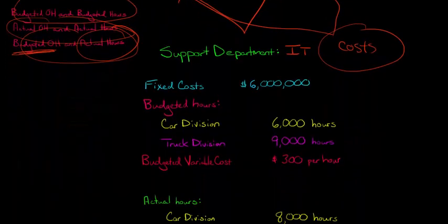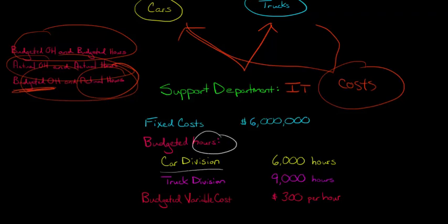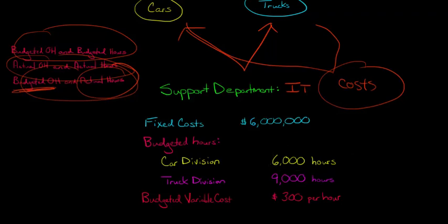Let's say this IT department has $6 million in fixed costs. We need to know the budgeted hours for each division — how many hours of the support department's time each will use. The car division is budgeted to use 6,000 hours of the IT department's time, and the truck division is budgeted to use 9,000 hours.